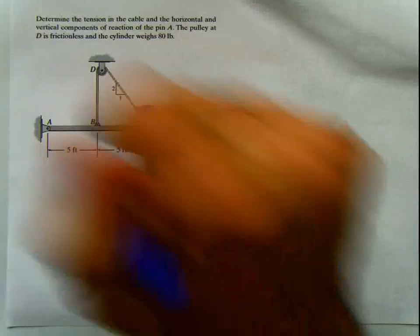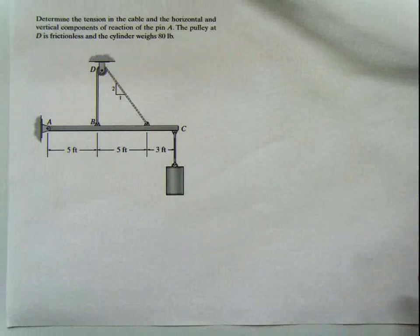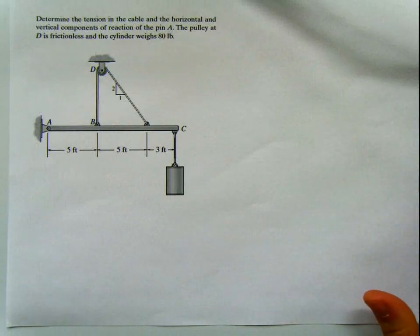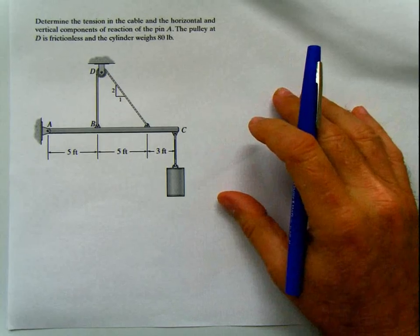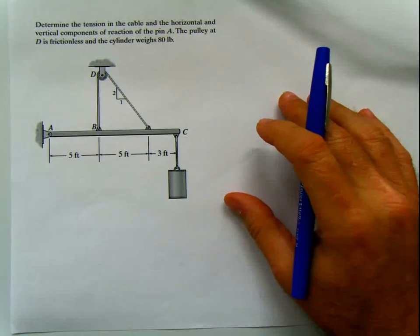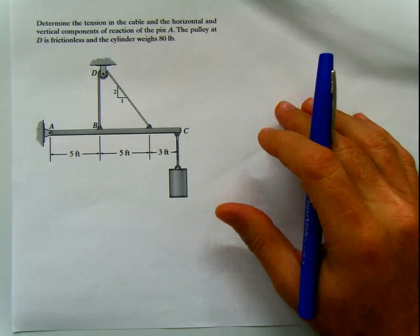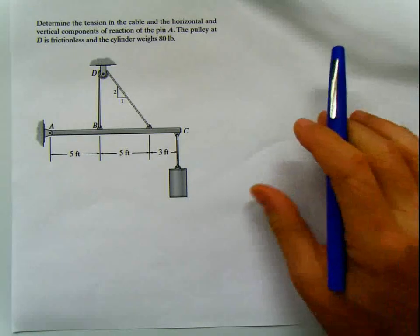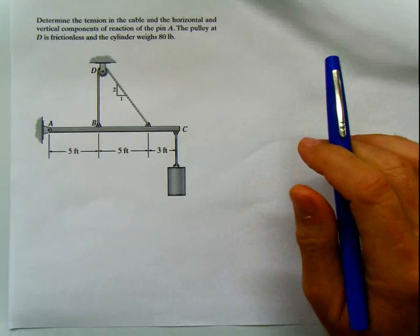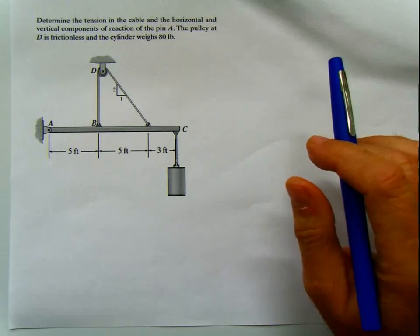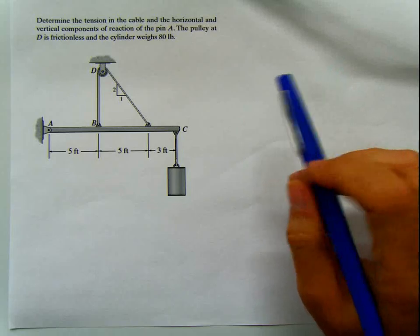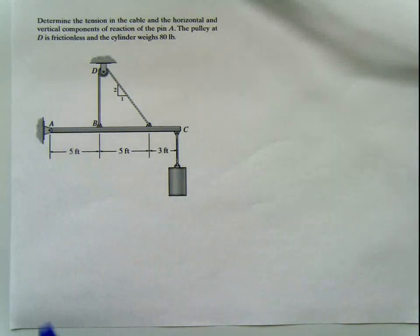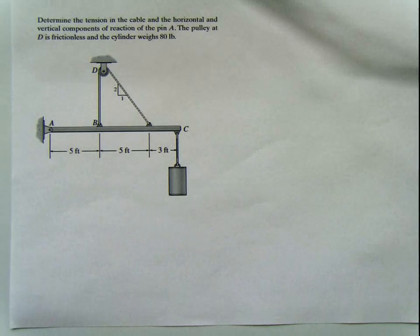Hello guys. We're going to be solving today some problems on chapter 5, which is rigid body equilibrium and supports. Basically, we're going to be doing the same thing that we did in the previous chapter. The difference, or the main difference, is now we have the support reactions that we have to calculate. In the other case, it was just plain and simple equilibrium.